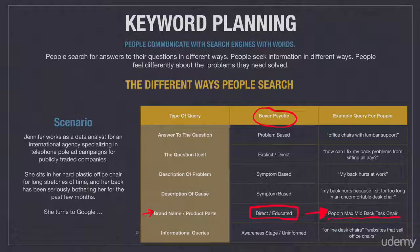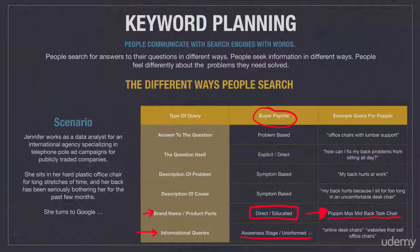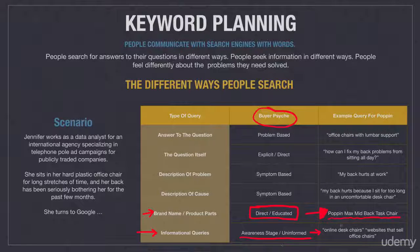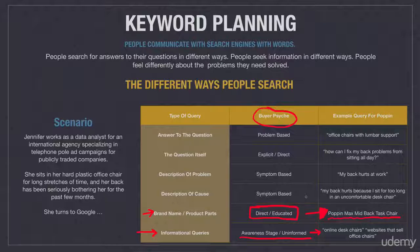Informational queries are most likely the broadest and most general way people search Google. They're usually indicative of somebody not yet in the buying phase — more in the awareness or uninformed stage. It's very hard to know with informational queries such as 'online desk chairs' or 'websites that sell office chairs' — they're clearly looking for information, but they don't indicate exactly what type. However, we could have an informational query like 'where could I buy an online desk chair right now at full price?' — that would be an informational query that's extremely high in commercial intent, and we would want to be extremely aggressive on that keyword.